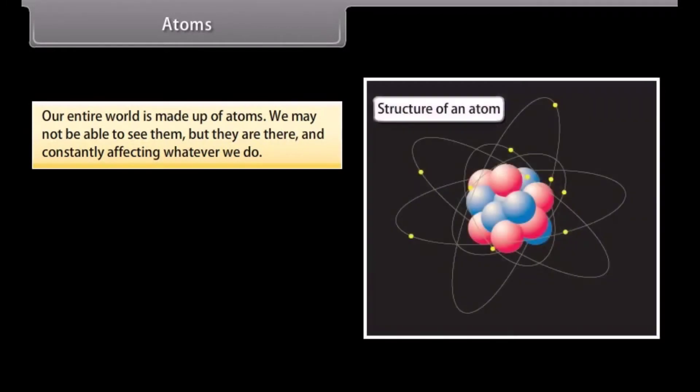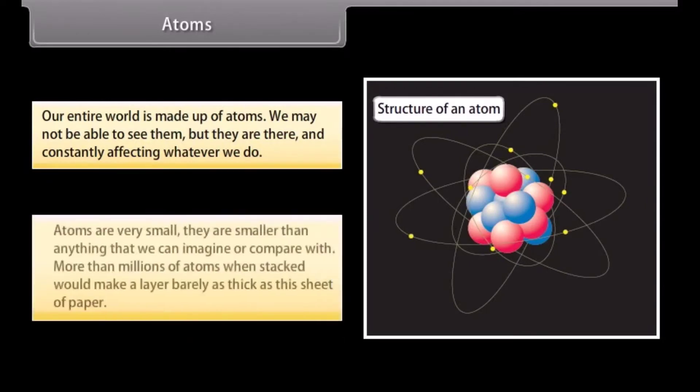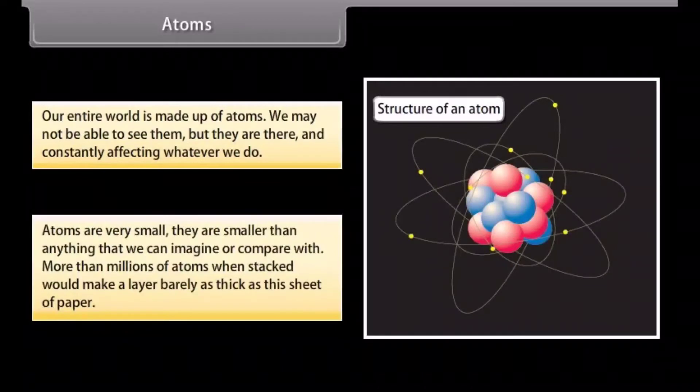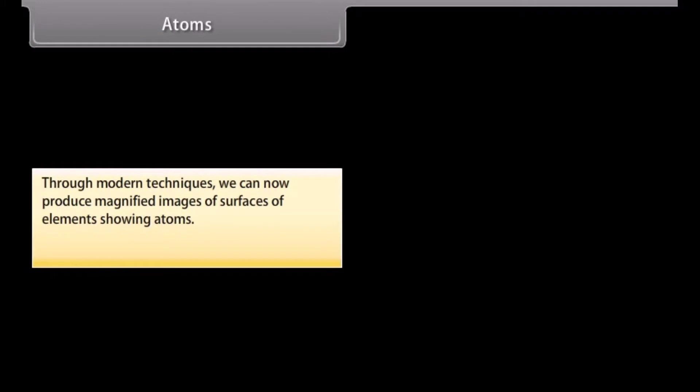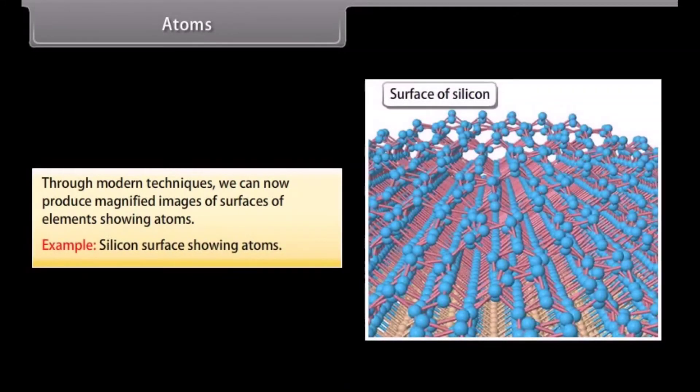Atoms are very small. They are smaller than anything that we can imagine or compare with. More than millions of atoms, when stacked, would make a layer barely as thick as this sheet of paper. Through modern techniques, we can now produce magnified images of surfaces of elements showing atoms. Example: Silicon Surface Showing Atoms.